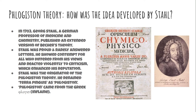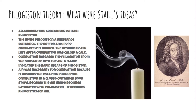Stahl renamed terra pinguis as phlogiston, from the Greek word meaning 'to inflame.' He said all combustible substances contain phlogiston, and the more phlogiston a substance contained, the better and more completely it burned. The residue or ash left behind after combustion was called a calx, and combustion released phlogiston into the air. A flame indicated a rapid escape of phlogiston. Air was necessary for combustion because it absorbed the escaping phlogiston. Combustion in a closed container soon stopped because the air became saturated — or phlogisticated.